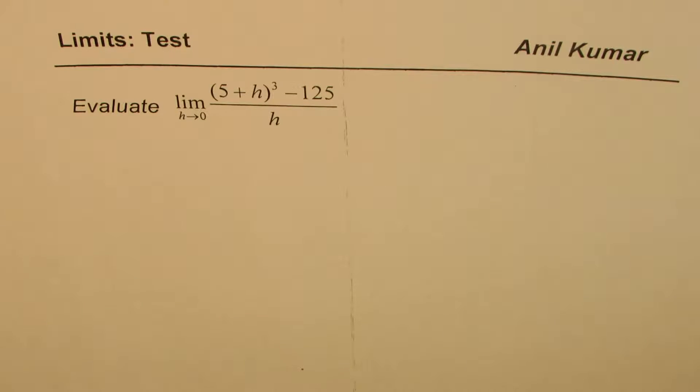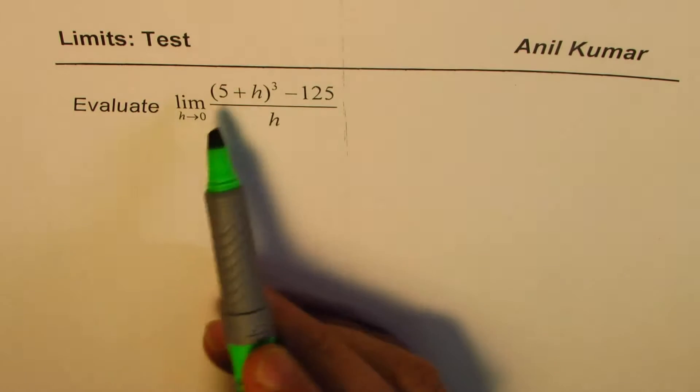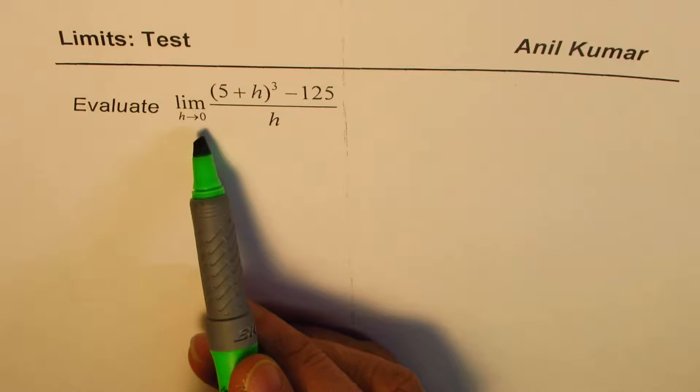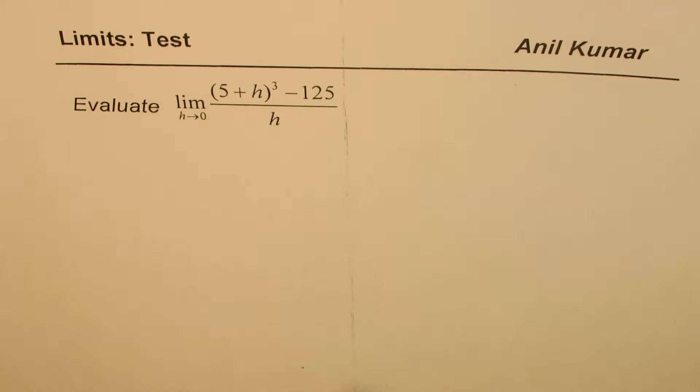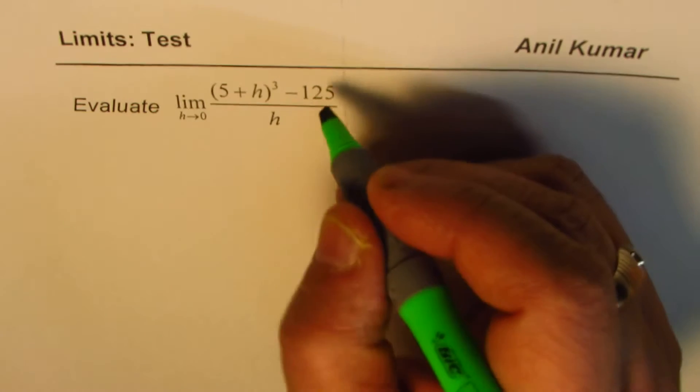I'm Anil Kumar, sharing with you a test question on limits. You need to evaluate the limit of this function when h approaches 0. The function is 5 plus h whole cube minus 125 divided by h.